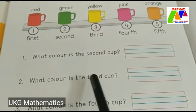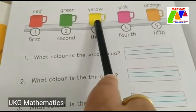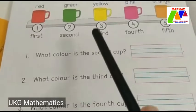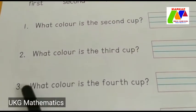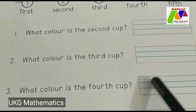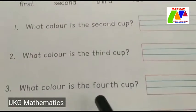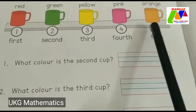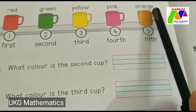What color is the third cup? Which color is this? Yellow color. So children, write here yellow. What is the spelling of yellow? Y-E-L-L-O-W. Then, what color is the fourth cup? Yes, pink. All of you write pink here. What is the spelling of pink? P-I-N-K. Then, what is the color of the fifth cup? Yes, orange. Write orange. O-R-A-N-G-E.